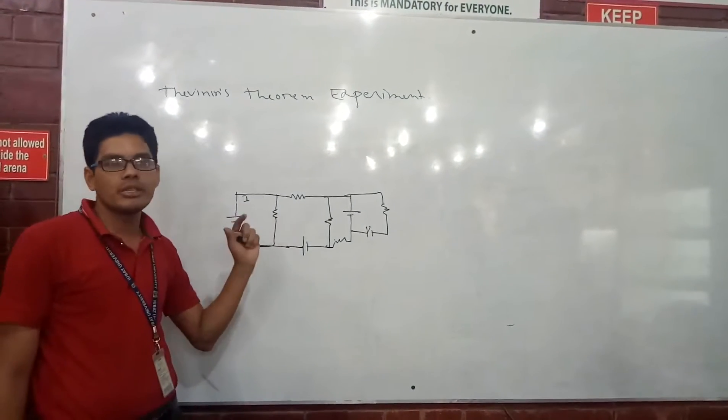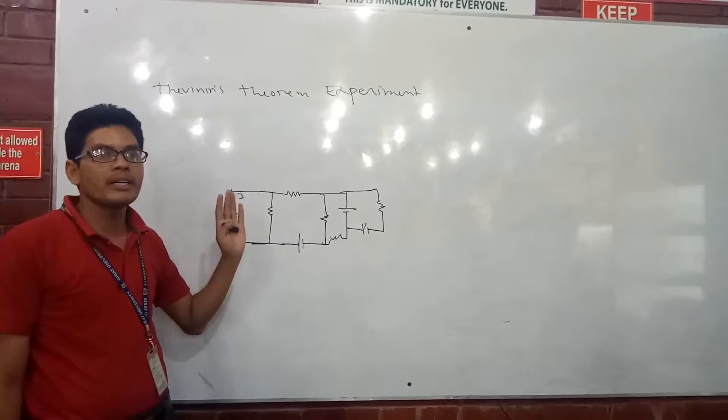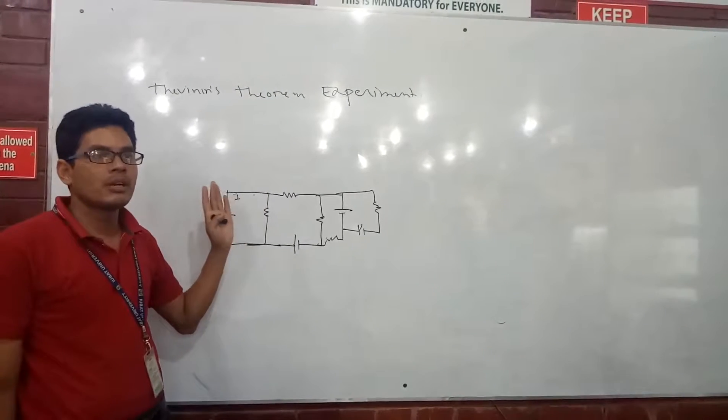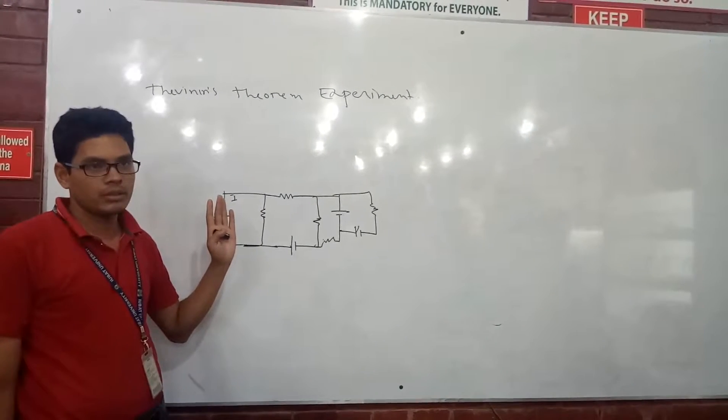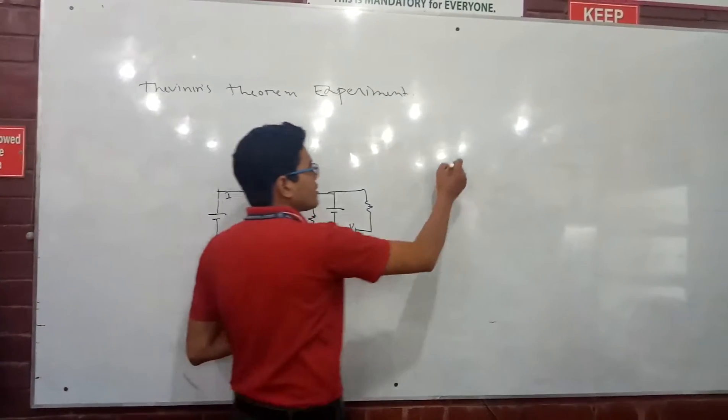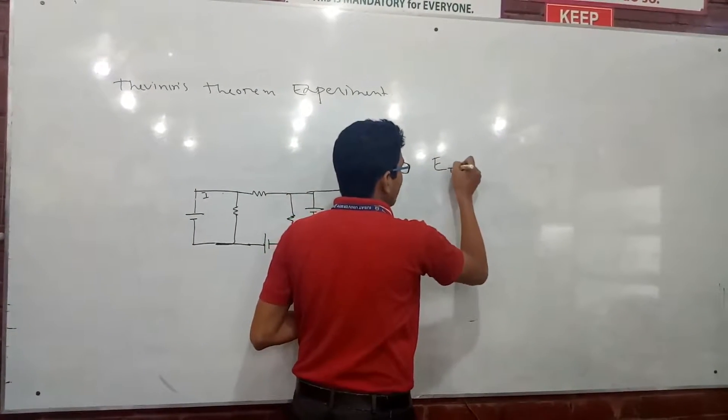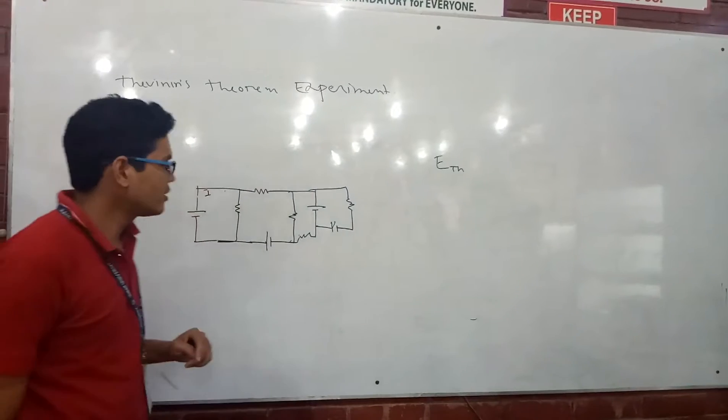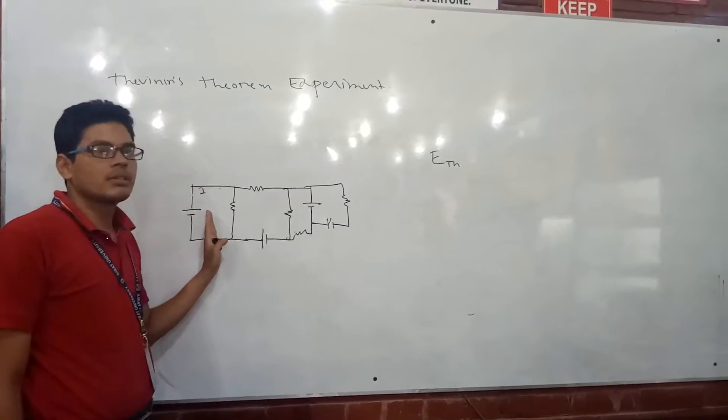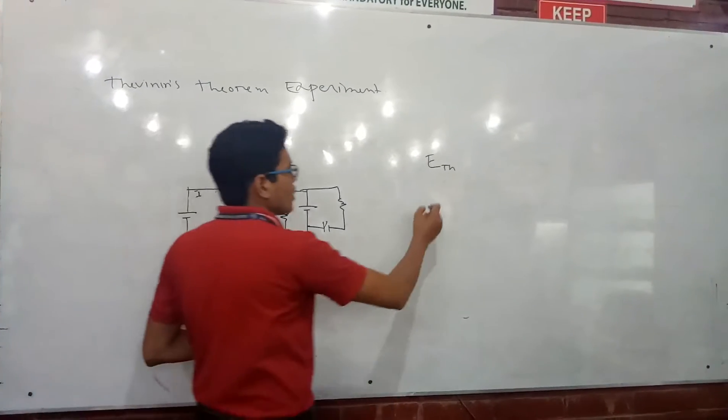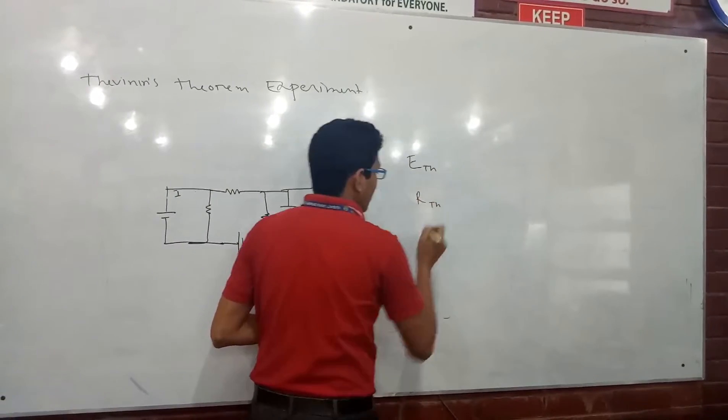To find the total current, we use Thevenin's theorem. That means you have to find the equivalent source potential, known as ETS (equivalent Thevenin source), and equivalent resistance, known as RTS. If we can find out these two...